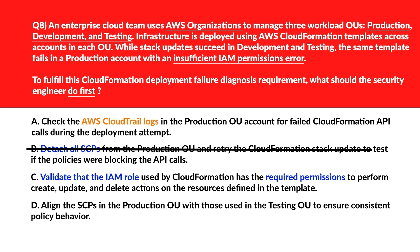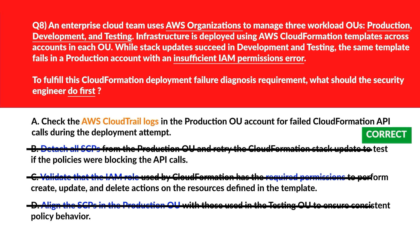Option C says: validate the IAM role used by CloudFormation has the required permissions to perform create, update, and delete actions on the resources defined in the template. Checking IAM role permissions is important, but without CloudTrail's error trace, it's unclear which permissions are missing. It's incorrect. Option D says: align the SCP in the production OU with those used in the testing OU to ensure consistent policy behavior. Making SCPs identical across OUs may eliminate OU-specific boundaries and doesn't explain the root cause. Let's delete this. Option A is the right answer.